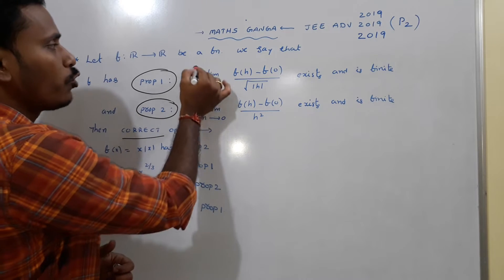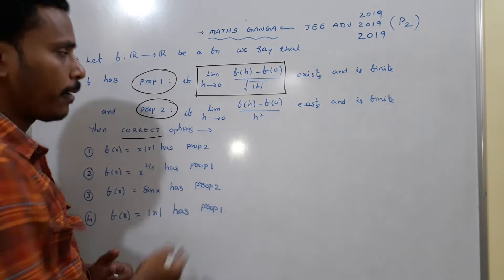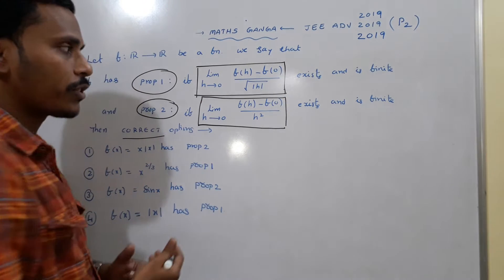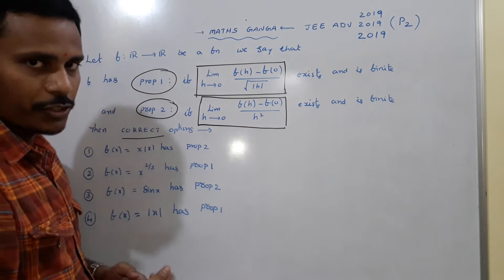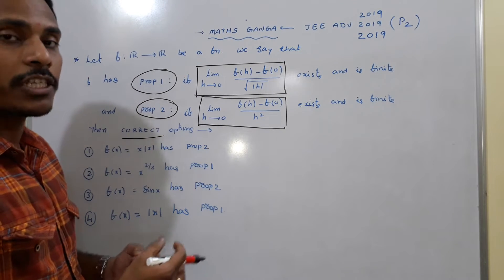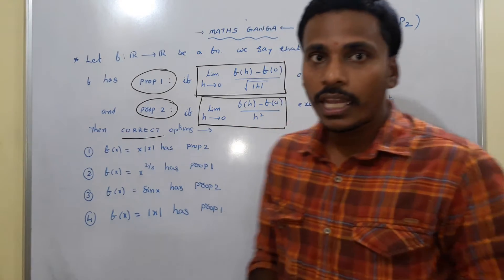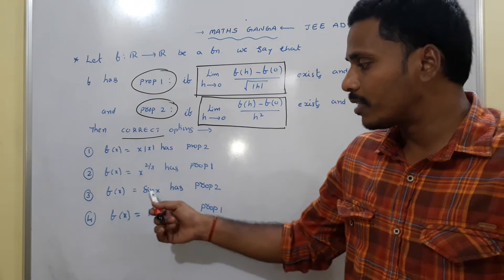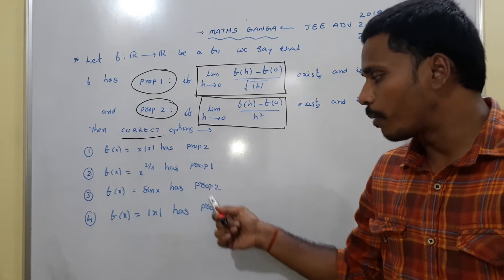Property 1 is that limit h tends to 0 of [f(h) − f(0)] / √|h| exists and is finite. Property 2 is that limit h tends to 0 of [f(h) − f(0)] / h² exists and is finite. The denominator for Property 1 is √|h| and for Property 2 is h². The given functions are: f(x) = x|x|, f(x) = x^(2/3), f(x) = sin x, and f(x) = |x|.